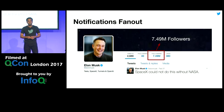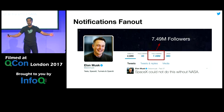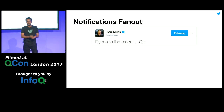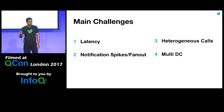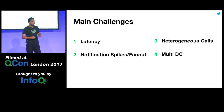Related to that, Twitter is highly asymmetric, unlike some other social networks. People like Elon Musk have millions of followers, so every time he tweets, we have to fan out his tweet to all his followers. Just like tweet fan-out, there's notification fan-out — we have to find all users to notify and deliver in real-time. The four main challenges we face are: latency, scale and handling spikes, heterogeneity of calls, and resilience — though by no means is this an exhaustive list.